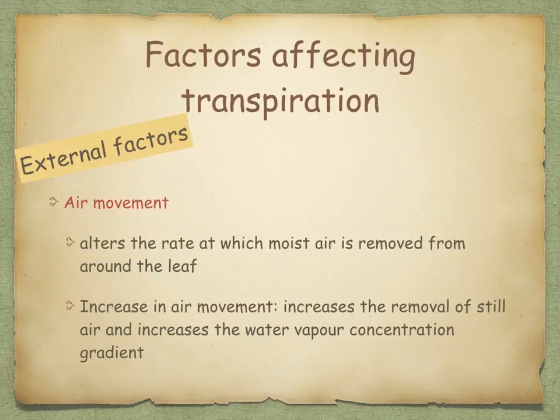Air movement alters the rate at which moist air is removed from around the leaf. An increase in air movement increases the removal of still air and increases the water vapor concentration gradient.